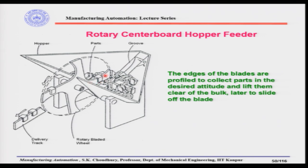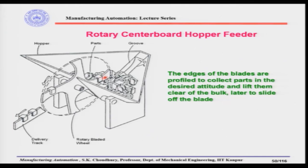In these blades the profiles are such that while moving through the mass of the parts, they will collect parts which are in the right orientation, because the part shape is such that it cannot be located on the blade otherwise. When the part is in position and the blade rotates, the part will slide down the blade, and when the blade is aligned to the delivery track the parts will come off in the right orientation.